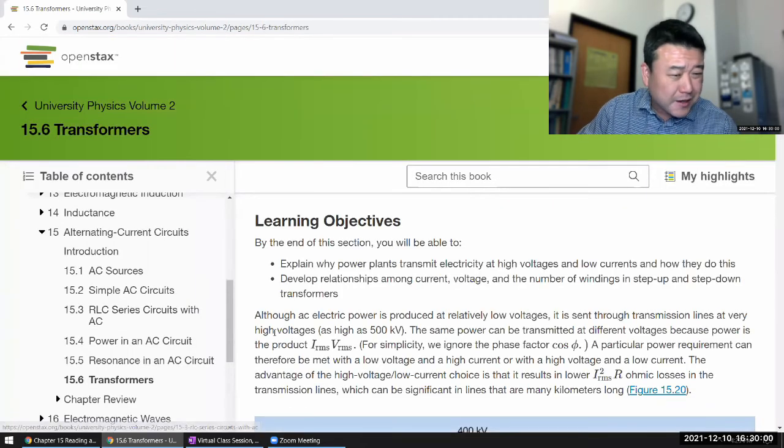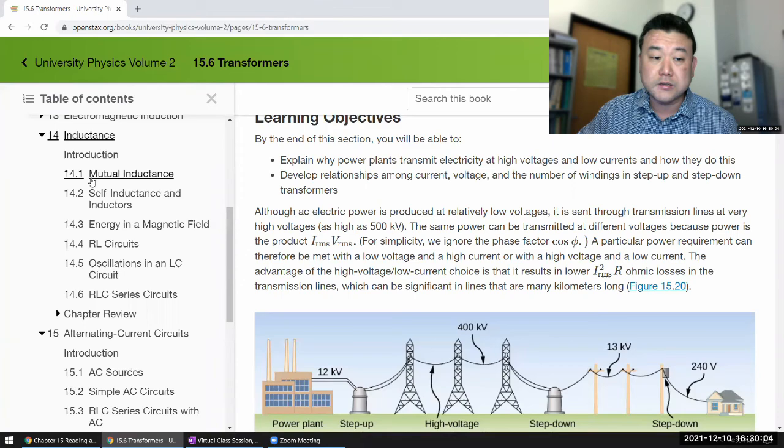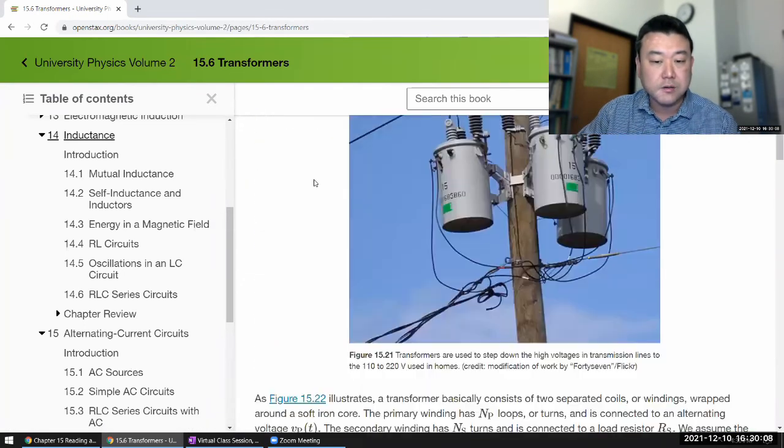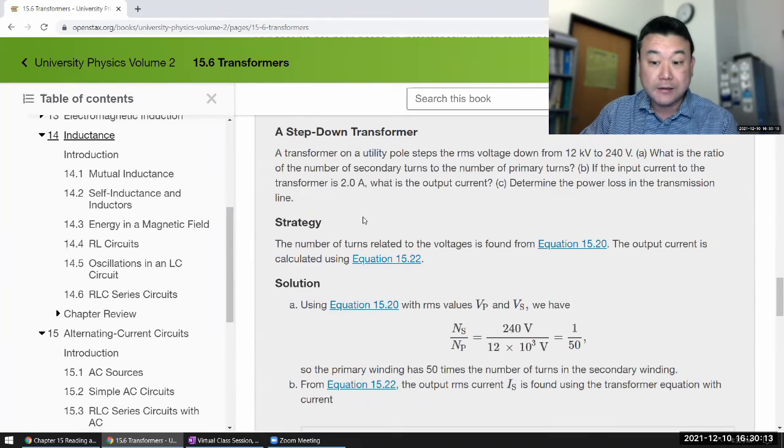And finally, the transformers. This is where your textbook covers it. We covered this along with inductance, along with the mutual inductance, where I thought the relationship was the most cleanest. But your textbook has a transformer thing here. You can read about it here.